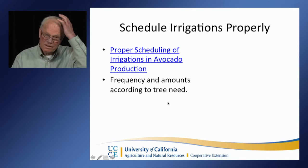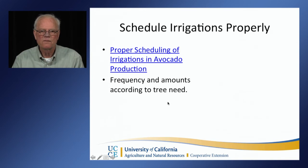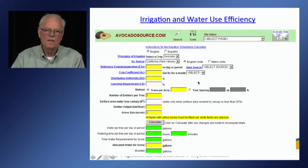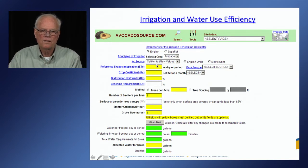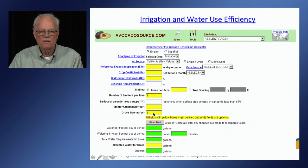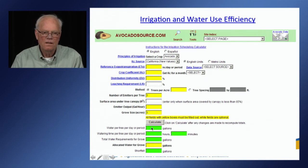Once you've got the mechanical part of the irrigation system fixed, you need to decide how to do proper scheduling — both the frequency and amount of water applied. Here's an example from avocadosource.com where you can input reference evapotranspiration from the California Irrigation Management System, a crop coefficient, your distribution uniformity, leaching requirement, number of emitters per tree, and acreage size. It will calculate how much water to apply per tree per day, the actual watering time to run, and the total water requirement for the whole grove.